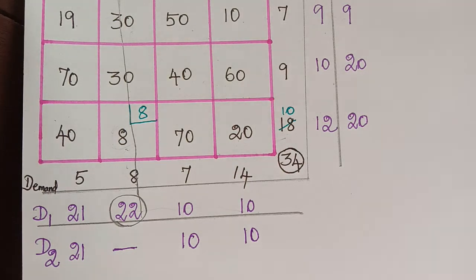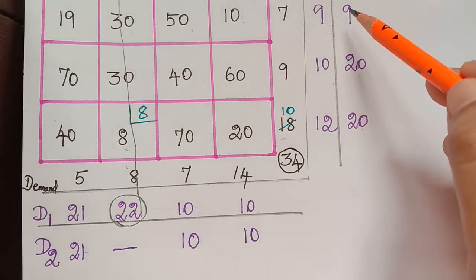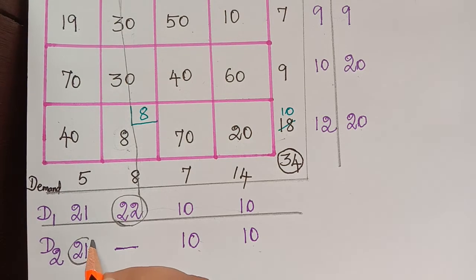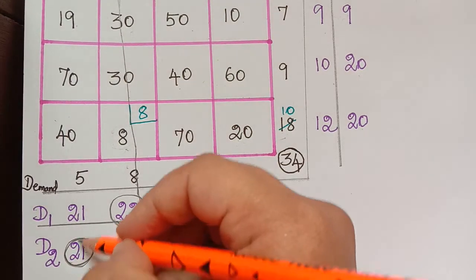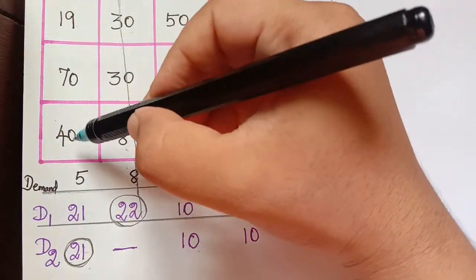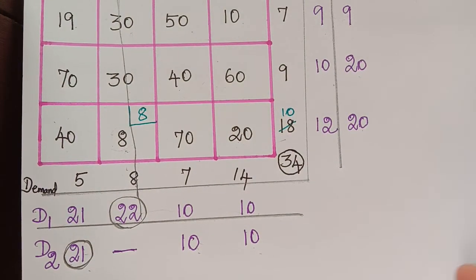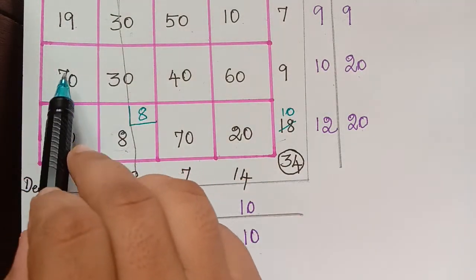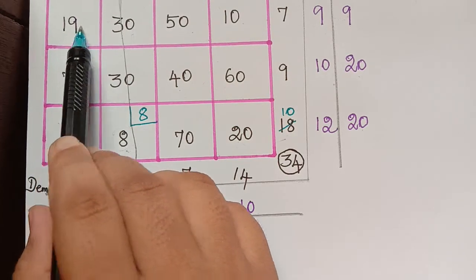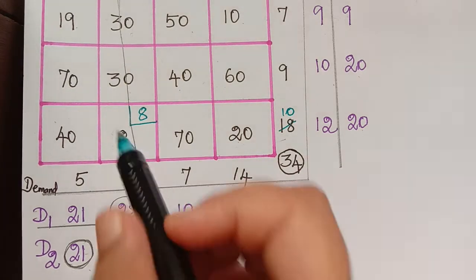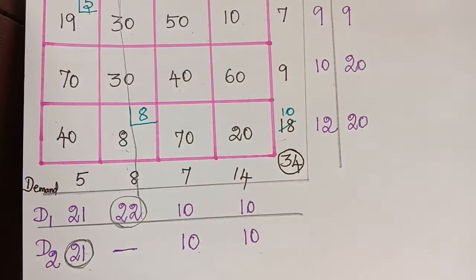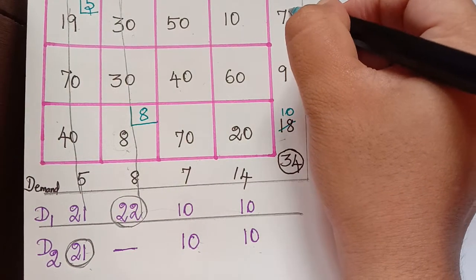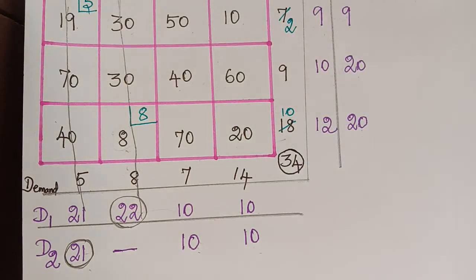From all D2 values — 9, 20, 20 for rows and 21, 10, 10 for columns — the maximum is 21, corresponding to column 1. The least element in column 1 is 19, so we allocate there. Supply is 7 and demand is 5, so we allocate 5, strike off column 1, and update the remaining supply to 7 minus 5 equals 2.